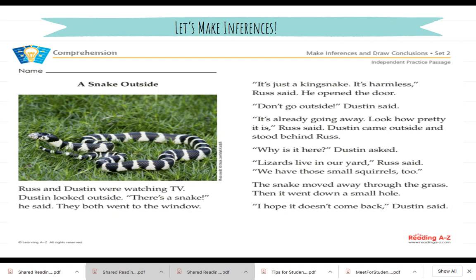A Snake Outside. Russ and Dustin are watching TV. Dustin looked outside. There's a snake, he said. They both went to the window. It's just a king snake. It's harmless, Russ said. He opened the door. Don't go outside, Dustin said. It's already going away. Look how pretty it is, Russ said. Dustin came outside and stood behind Russ.